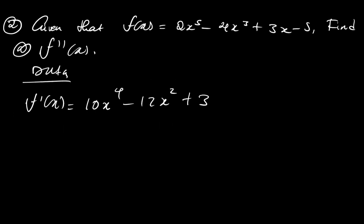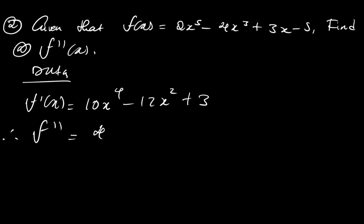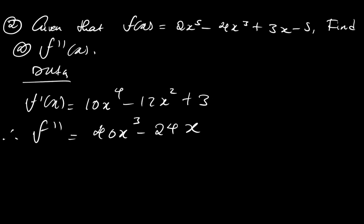So f'(x) equals 10x⁴ minus 12x² plus 3. Now to find f''(x), we differentiate f'(x): this gives us 40x cubed minus 24x. The derivative of the constant 3 is zero, so it drops out. Therefore, f''(x) equals 40x³ minus 24x. That is our final answer.